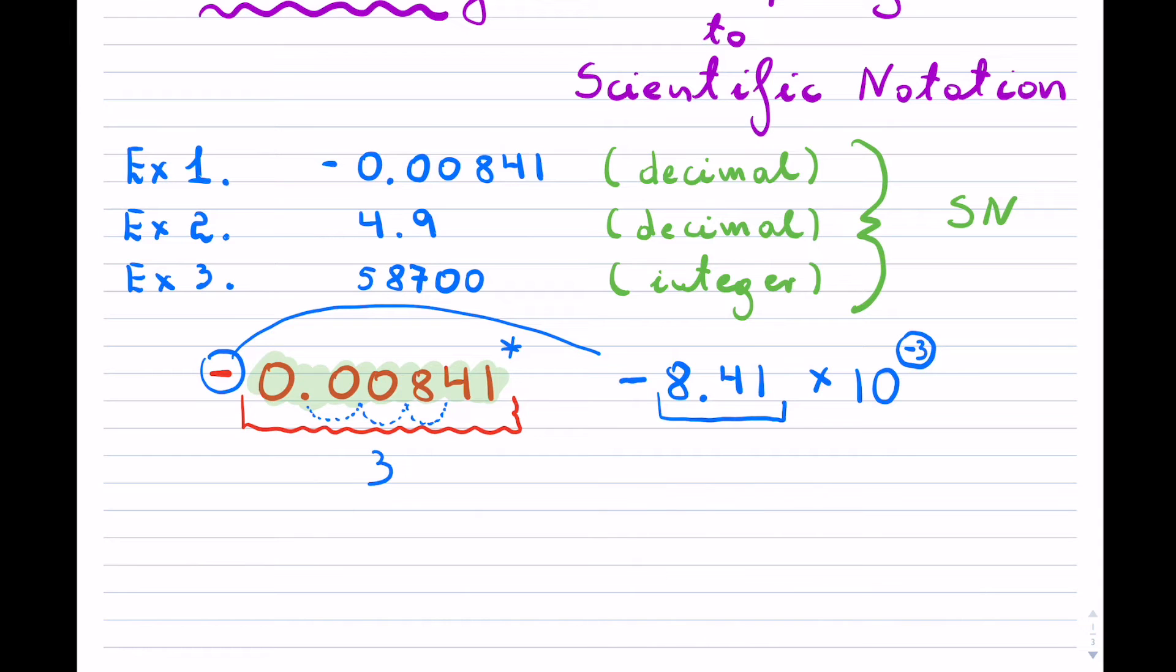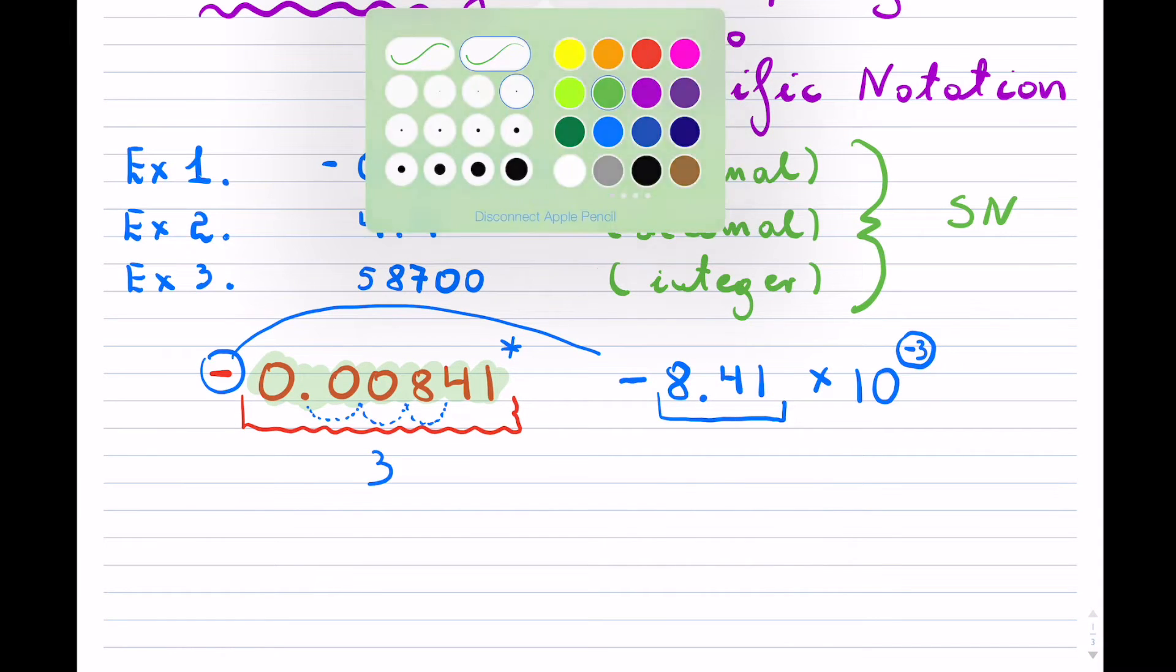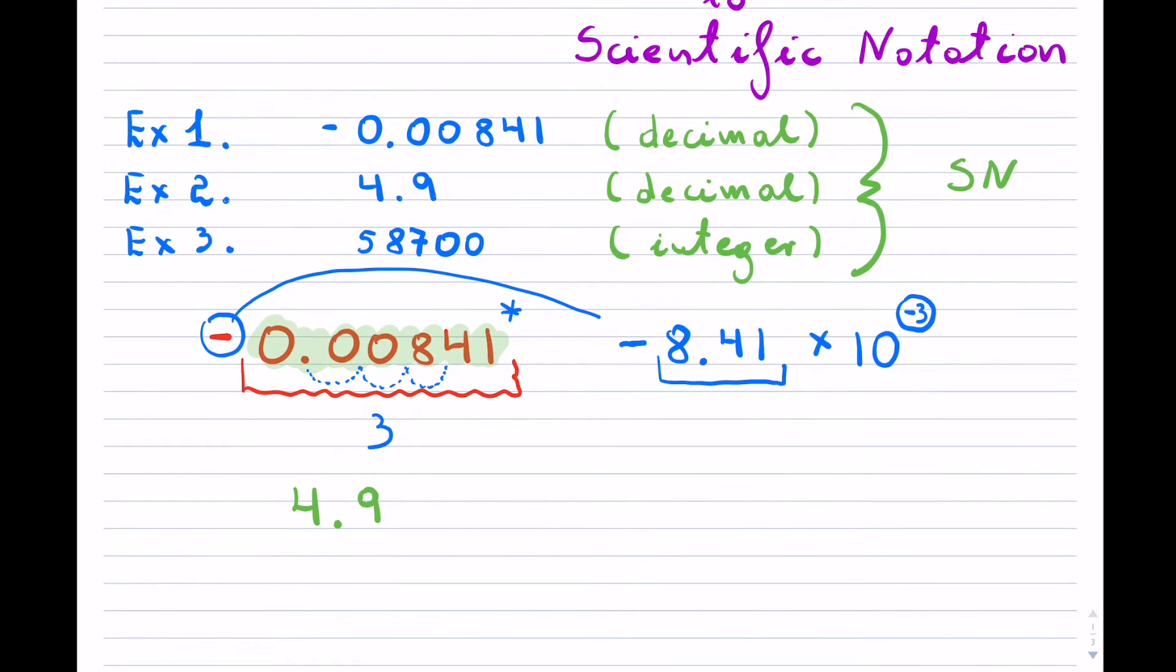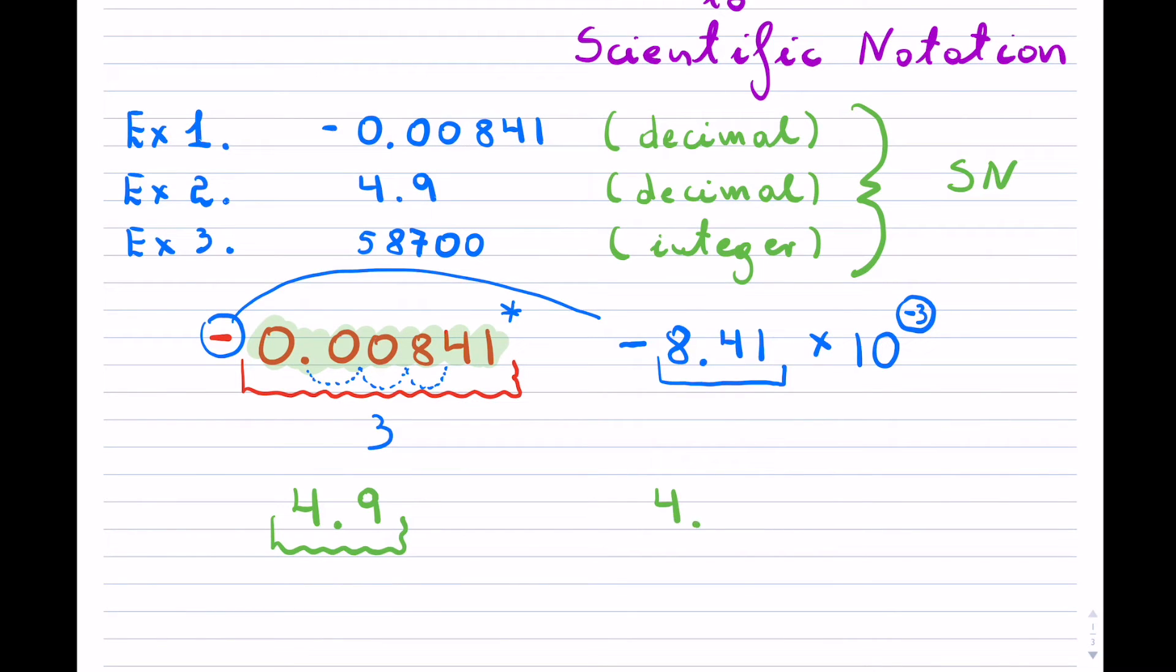So now let's try the second example. In our second example, we have 4.9. I purposely picked this because here our decimal number is already between 1 and 10. So we're not going to shift the decimal at all. It will just stay there. And that's the easiest thing that happens. When you are not shifting the decimal, that means it didn't shift anything. The exponent becomes 0 because you didn't shift the decimal at all. So that completes the second example.